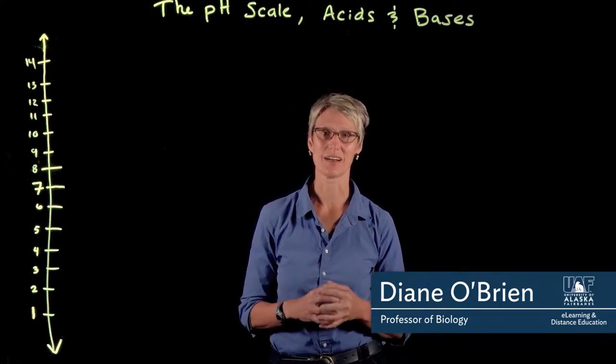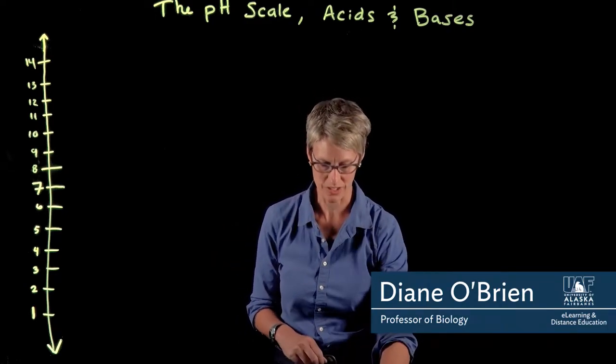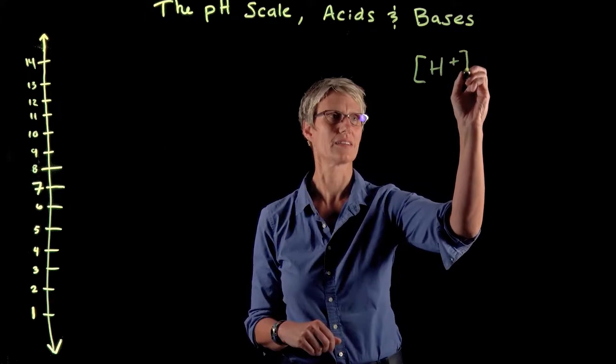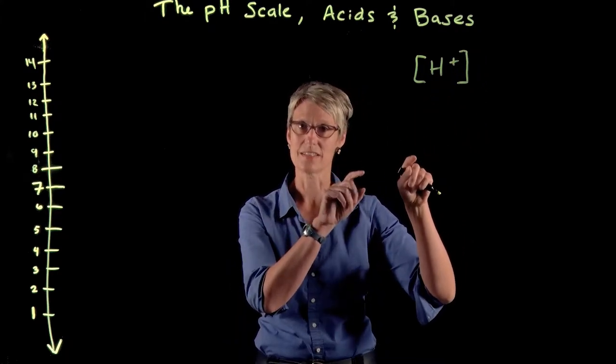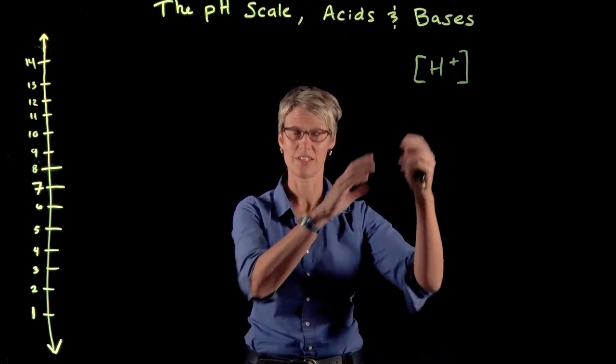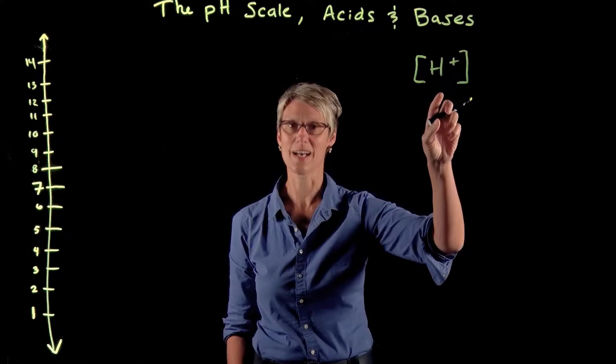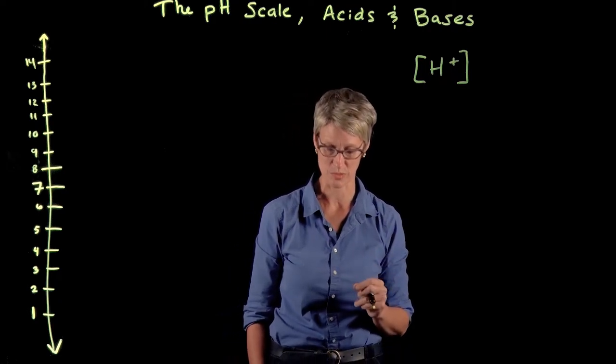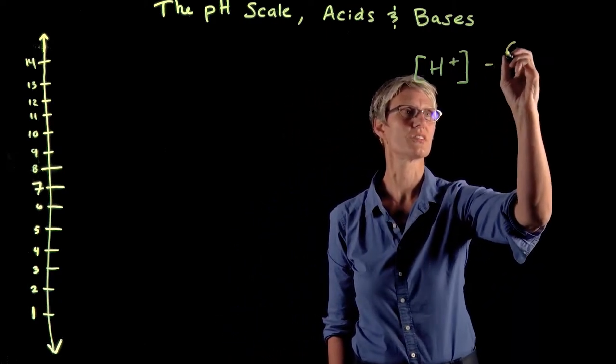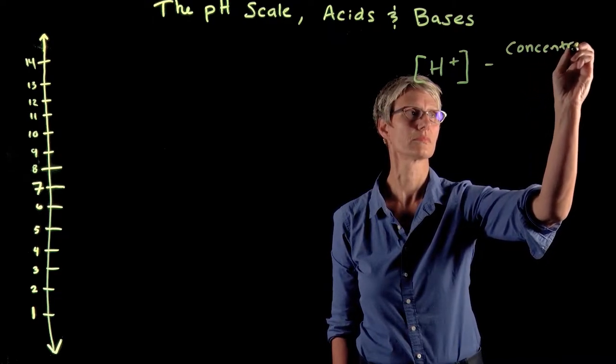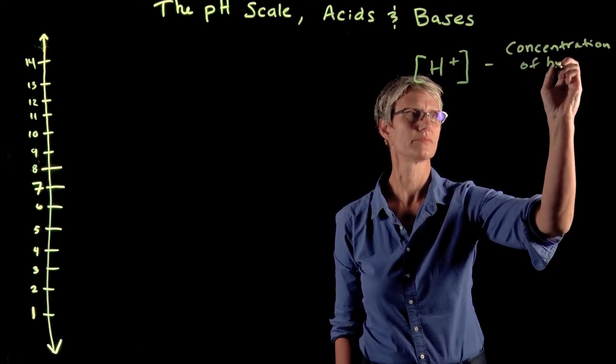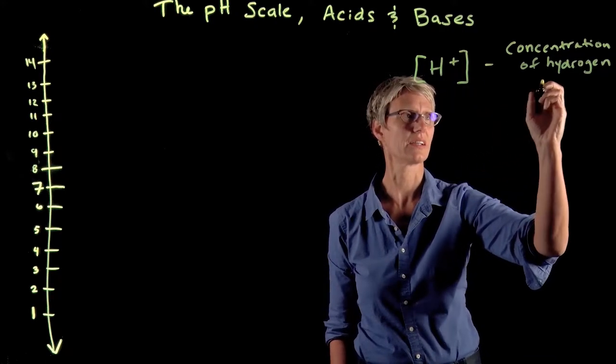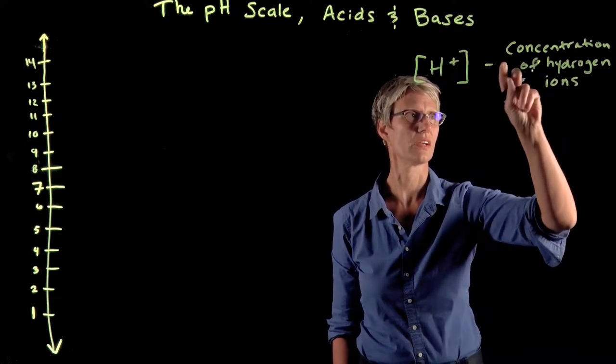Acid-base chemistry and the pH scale are all about describing the concentration of hydrogen ions in water, which we draw using square brackets [H+]. A hydrogen ion is a hydrogen atom that's lost its electron, so a hydrogen ion is the same thing as a proton. I use that square-bracketed nomenclature a lot in class because concentration is a very long word to write.